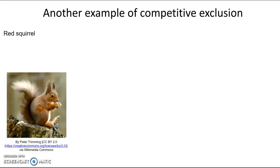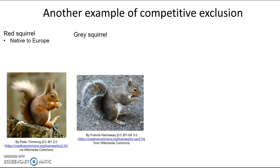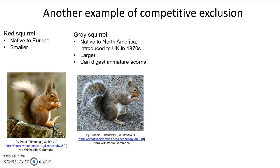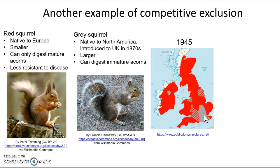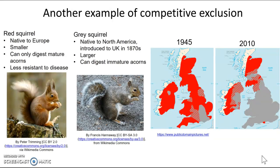A more relatable example of competitive exclusion involves the red squirrel and the eastern gray squirrel. The red squirrel is native to Europe, whereas the gray squirrel is native to North America but was introduced to Europe in the 1870s. The gray squirrel is larger and can digest acorns earlier in the season before they're mature, whereas the red squirrel can only digest mature acorns. The gray squirrel can therefore eat acorns before the red squirrel can access them. The red squirrel is also less resistant to a disease the gray squirrel is already resistant to. By 1945 the gray squirrel had taken over much of the range, and by 2010 most of southern England was completely taken over by the gray squirrel, with the red squirrel limited to just a few areas.